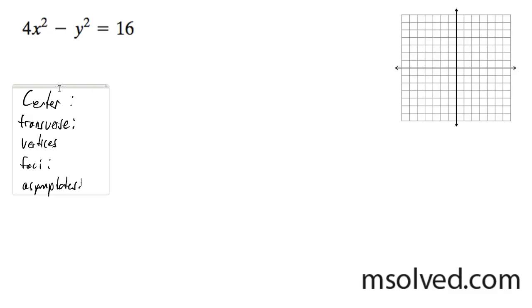We have the following hyperbola, and we want to find all the information below here. The first thing we need to do is divide through by 16, and this is going to give us x squared over 4 minus y squared over 16 is equal to 1.